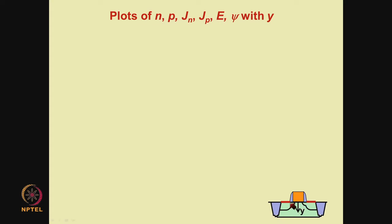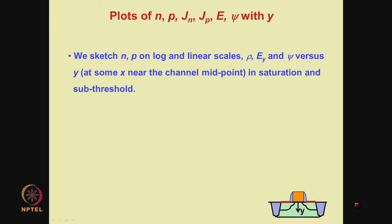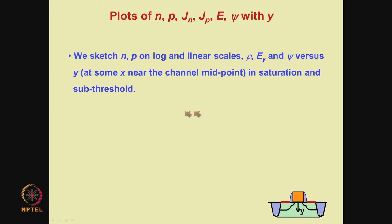The y direction is from the interface into the substrate, perpendicular to the silicon–silicon dioxide interface. We shall sketch n and p on both log and linear scales, and then sketch rho, the space charge which depends on n and p. Then we sketch E_y, the y component of the electric field directed from the interface into the bulk, and then the potential psi versus y at some x near the channel midpoint. We shall do this in saturation and subthreshold conditions.